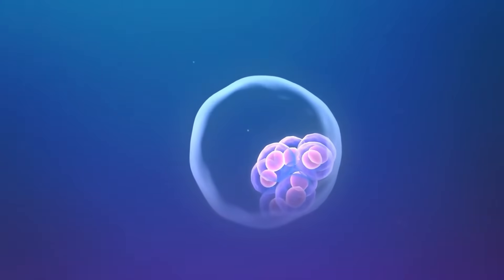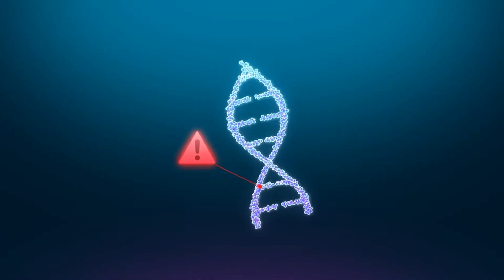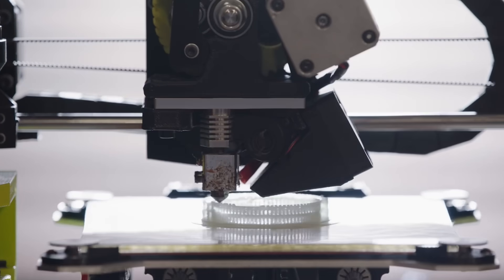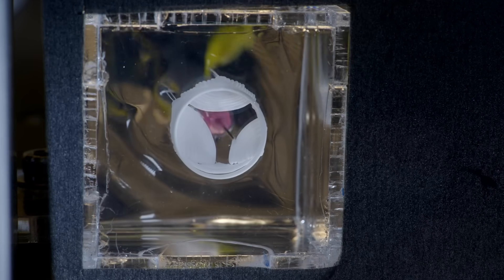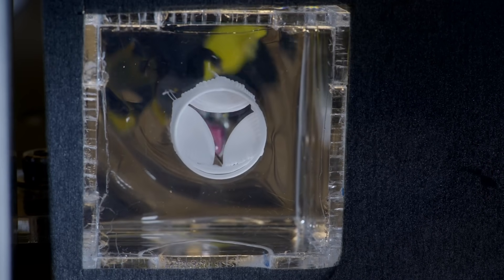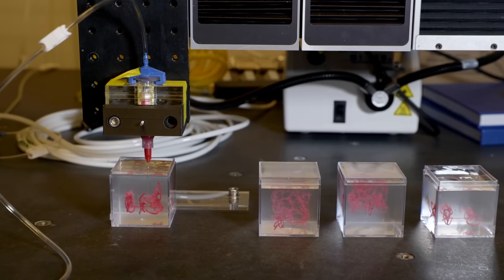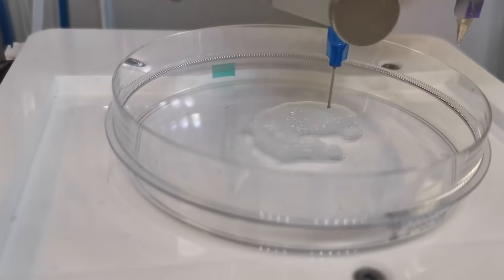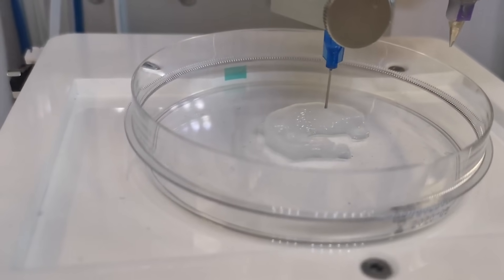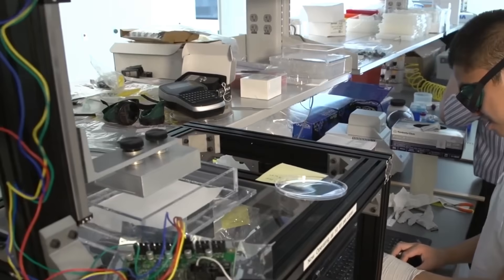This technology also opens doors to treating previously incurable conditions, such as certain liver, kidney, or heart diseases, by providing functional tissue replacements. Furthermore, bioprinted organs and tissues can be produced using a patient's own cells, drastically lowering the risk of immune rejection and eliminating long-term dependence on immunosuppressive drugs. The integration of vascular networks within bioprinted tissues represents another major advancement as it enables nutrient and oxygen supply necessary for long-term tissue survival. Beyond clinical applications, bioprinting also enhances medical research by providing realistic models for studying disease progression, genetic disorders, and cellular interactions.